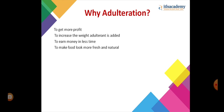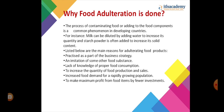Why is adulteration done? Simply, why do people adulterate food? To get more profit, to increase weight by adding adulterants, to earn money in less time, and to make food look more fresh and natural. The process of contaminating food or adding foreign components is a common phenomenon in developing countries.